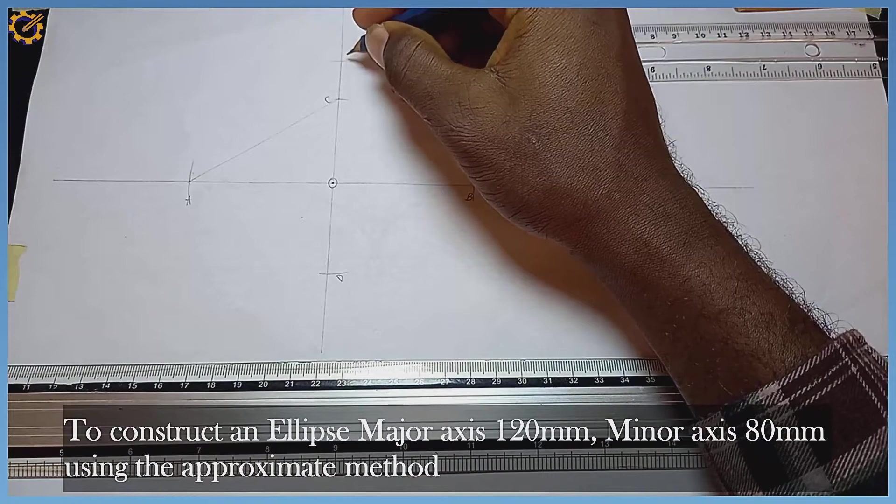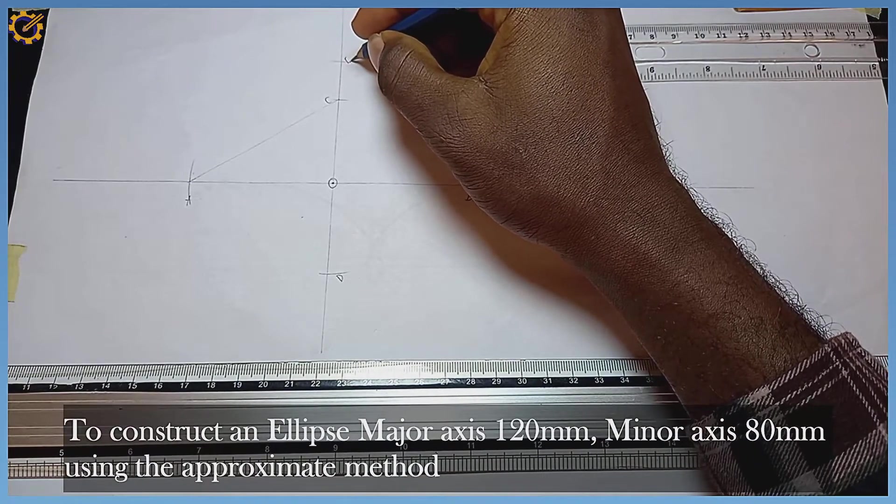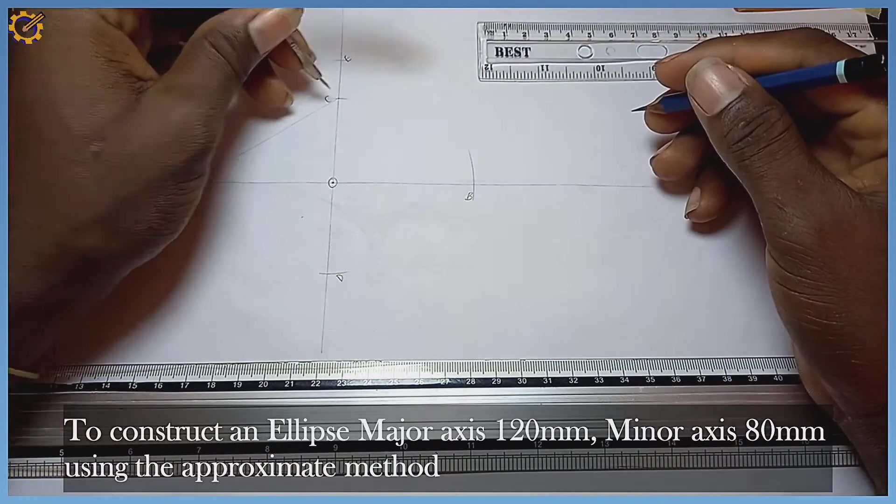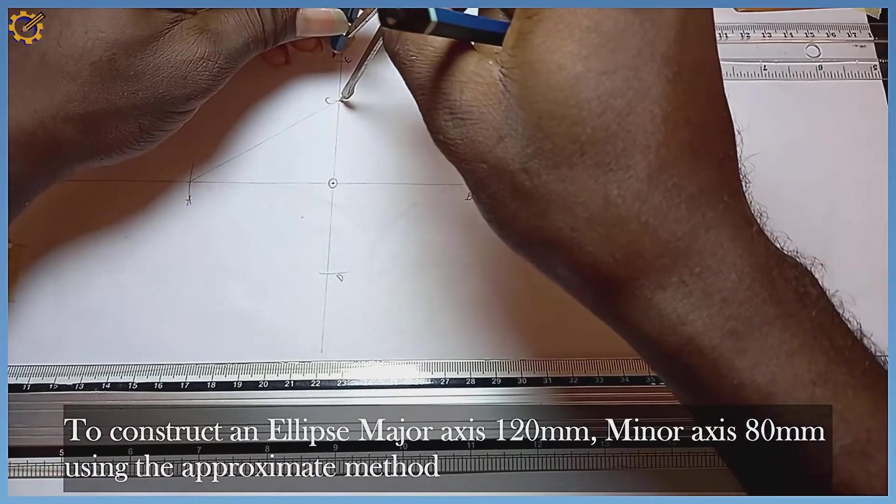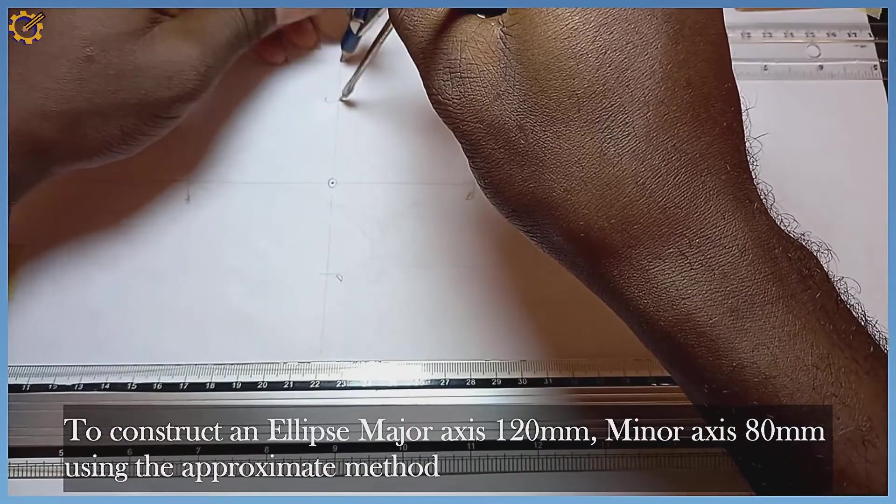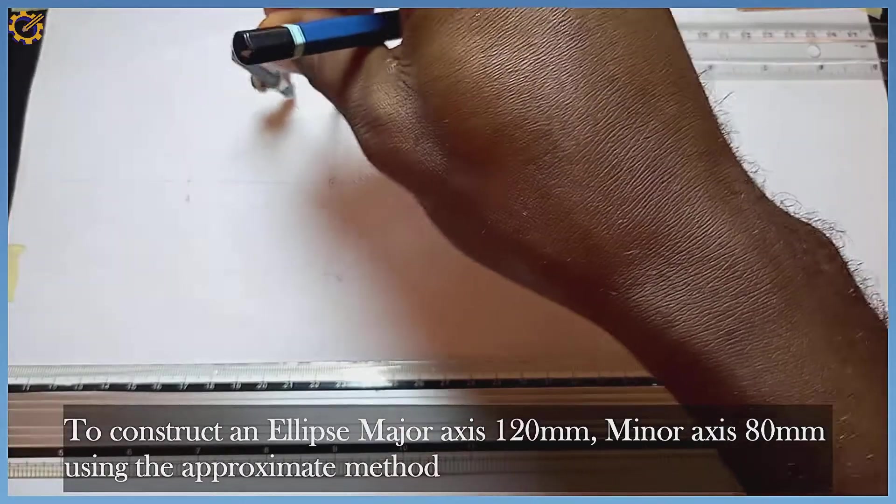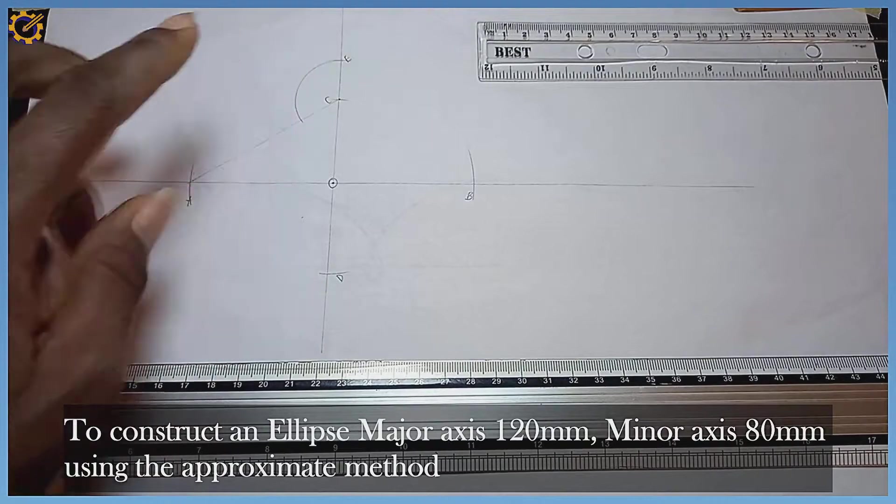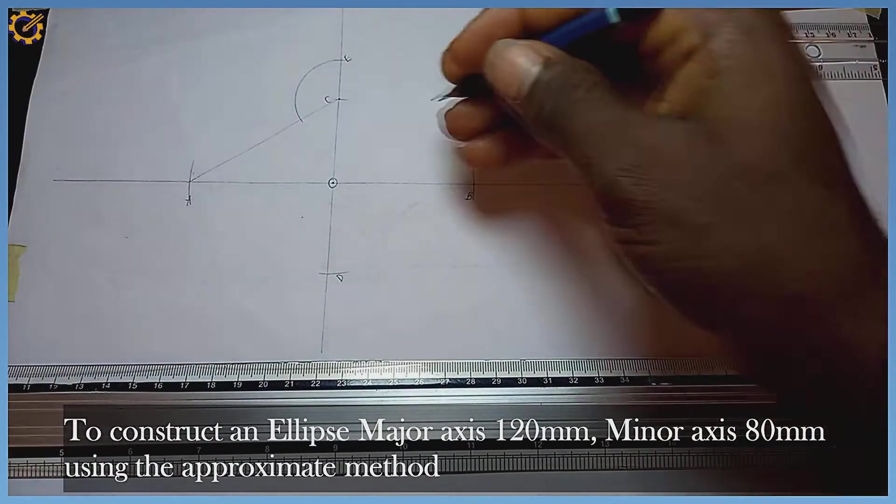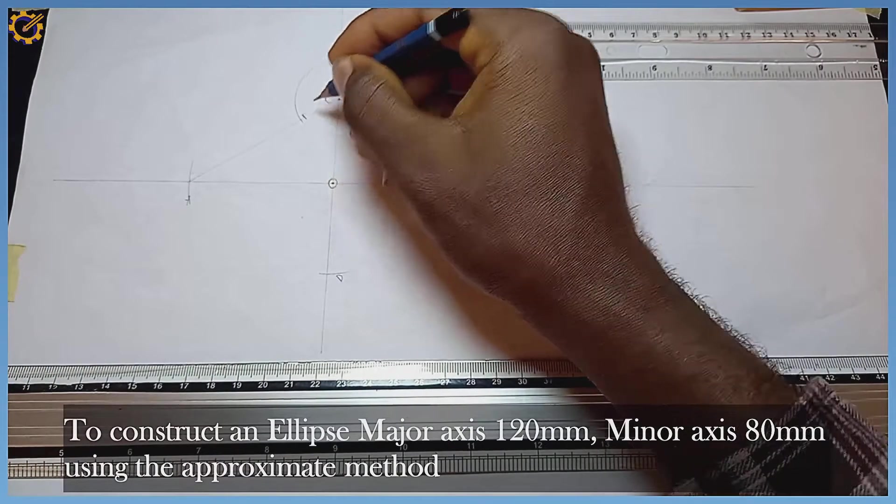With radius CE, I draw an arc like this touching this incline line. Wherever it touches that incline line, that's going to be mark F.